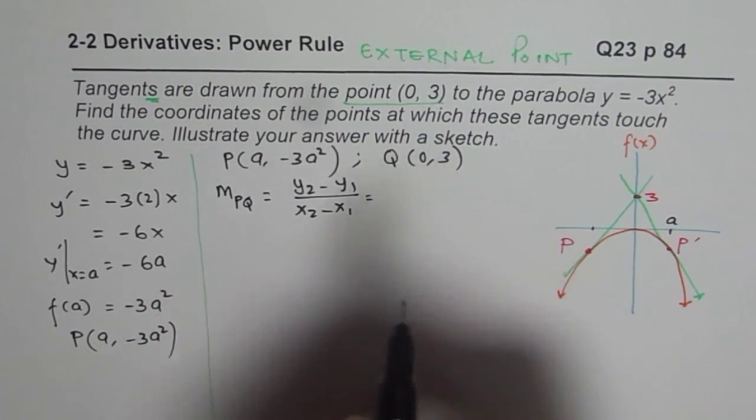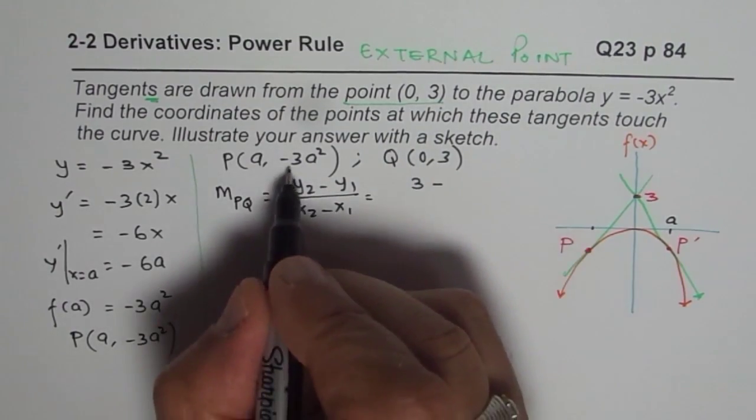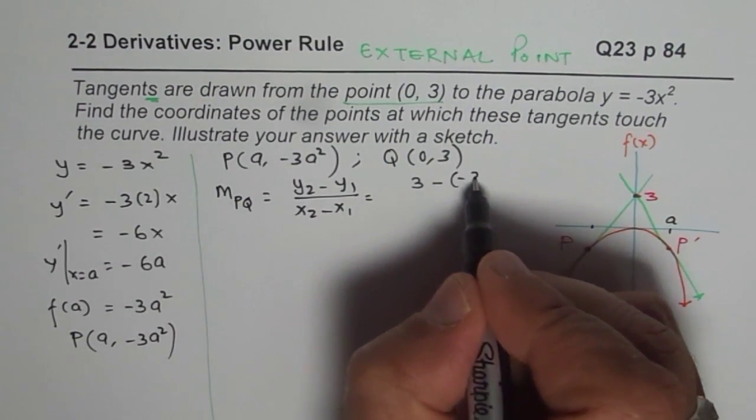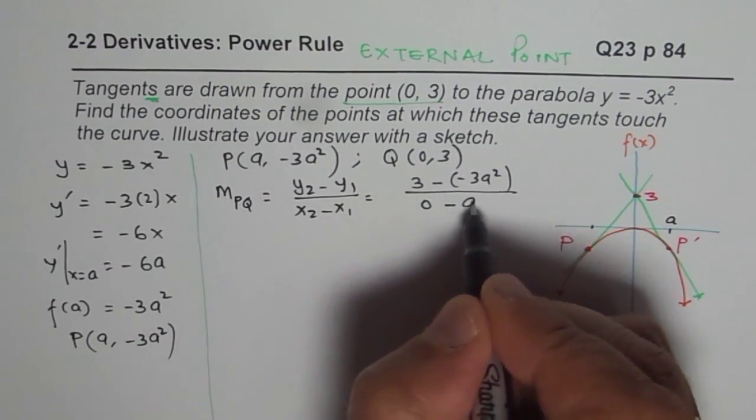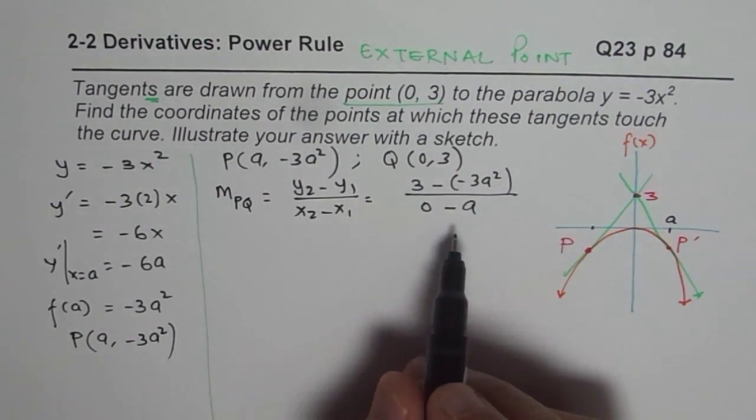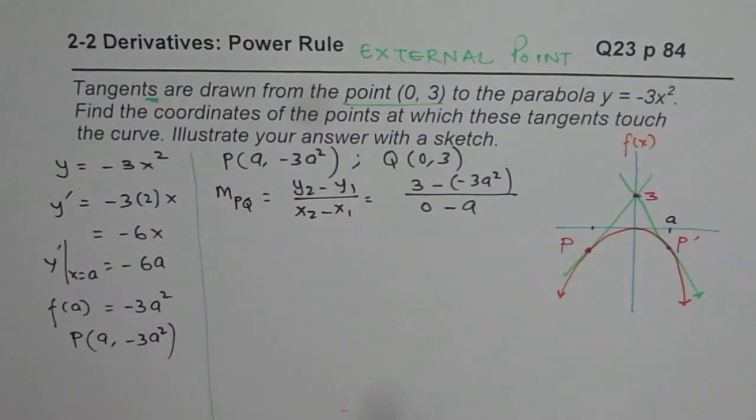So let's say m_PQ is (y₂ - y₁)/(x₂ - x₁). So y₂ for me is 3. So I will say 3 minus of this, which is -3a², divided by 0 - A. So that becomes the slope. But we know that this slope should be how much?